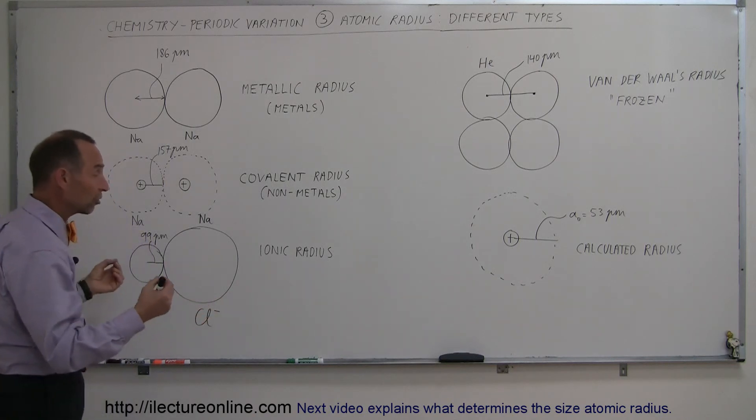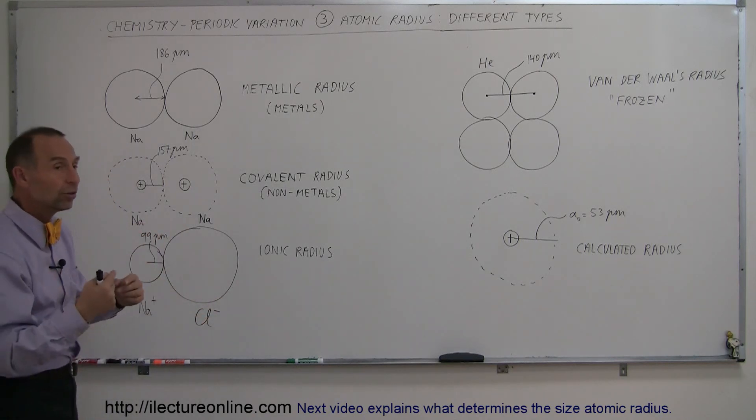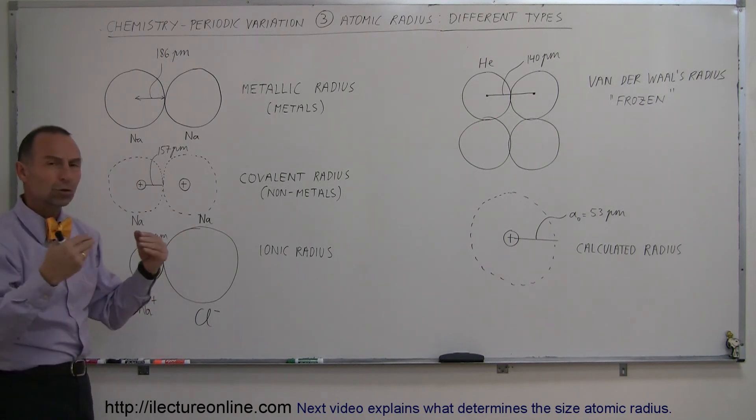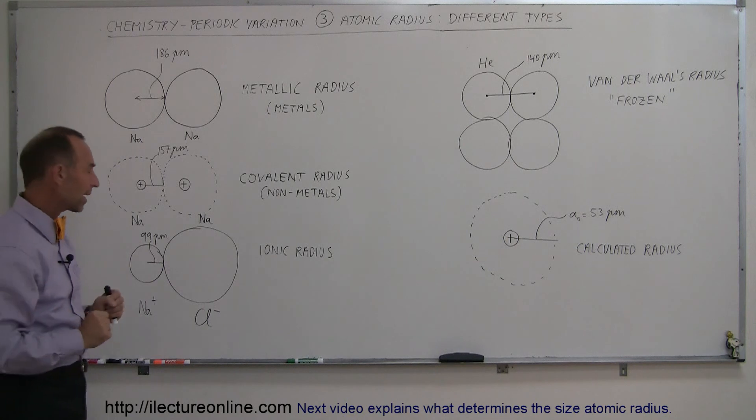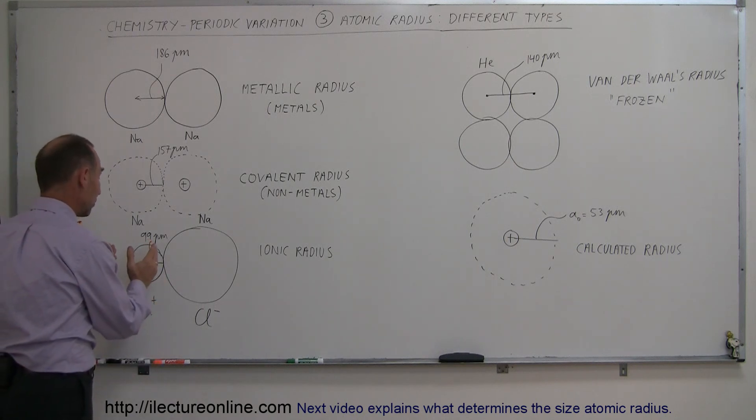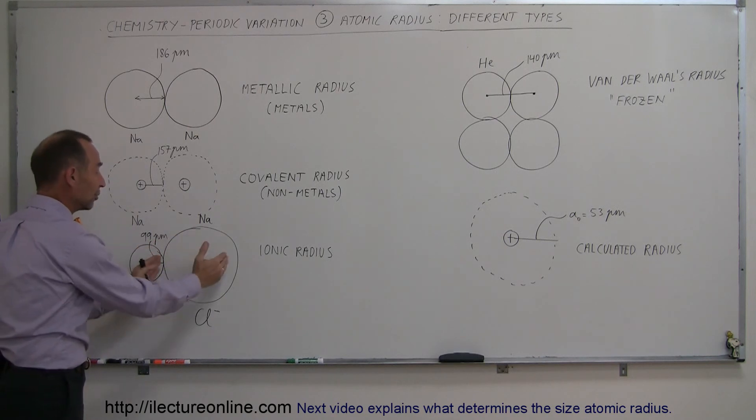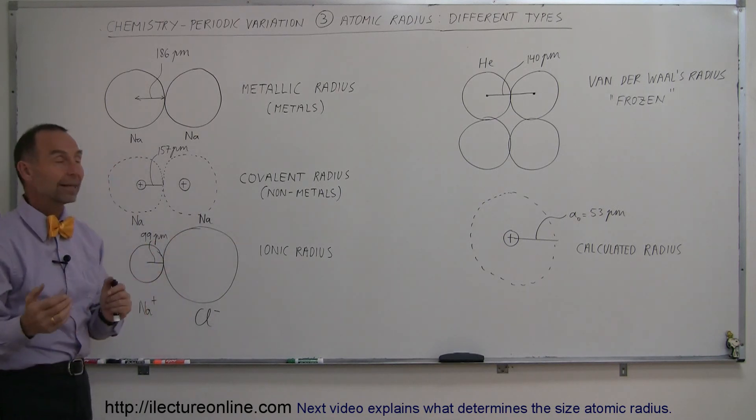We can also talk about the ionic radius. It's when atoms actually donate electrons to each other, therefore become ions and then they bond together due to the Coulomb forces pulling them together because the opposite charges attract and therefore you can see that we have what we call the ionic radius which is for metals typically much smaller and for non-metals typically much larger than the atomic radius.